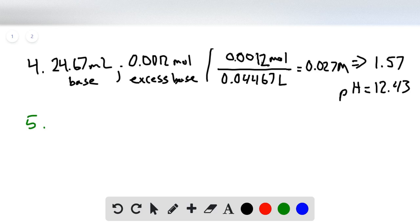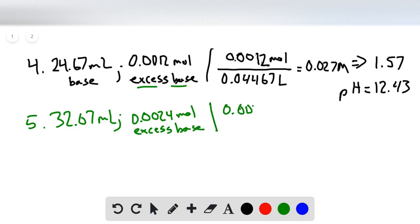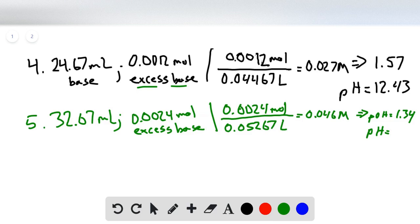Our last point we'll calculate is when we add 8 more milliliters, 32.67 milliliters total. We're now going to have two times this value, so 0.0024, because instead of 8 milliliters excess we have 16 milliliters of excess base. We do the same process: moles divided by the volume, which is now 0.05267 in liters, which gives us this concentration, which gives a pOH equal to 1.34 and a pH of 12.66.